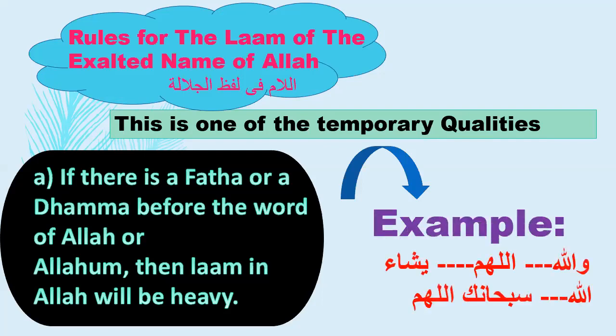Example: 'Wallahu' — there is a Fathah on 'Wa' before the word Allah, so the Lam is heavy. 'Yasha'u Allah' — Allah is preceded by Hamza in the word 'yasha'u', and that Hamza has Dhamma. 'Subhanak Allahumma' — Allahumma is preceded by Kaaf in the word Subhanak, which has Fathah, so the Lam is heavy.